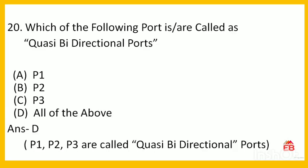Next: which of the following ports are called quasi bi-directional ports? Options are P1, P2, P3, or all of the above. The correct answer is all of the above — except P0, all the other ports P1, P2, and P3 are quasi bi-directional ports. So option D is correct.